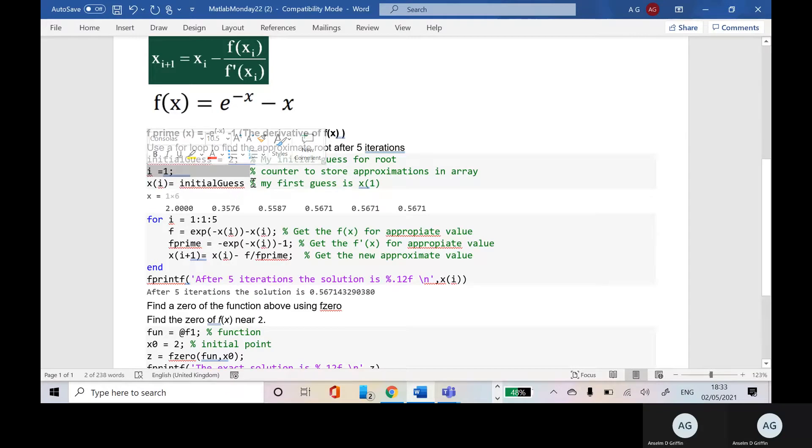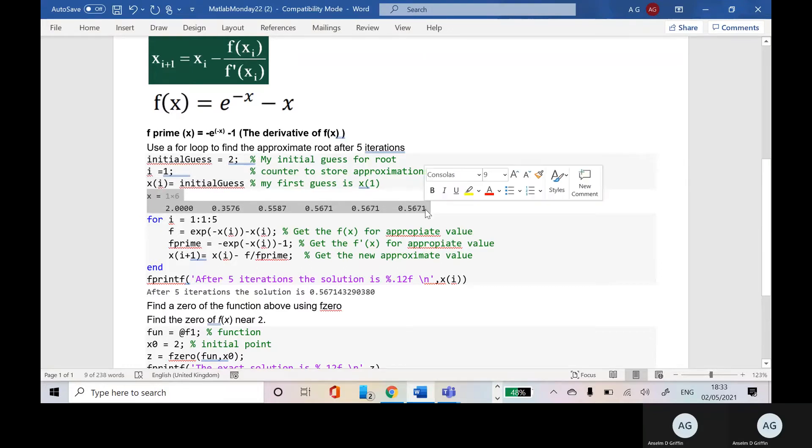So I need a counter for the loop or for the array. And x1 is my initial guess, so x1 would be 2. Now MATLAB being MATLAB, when I published it, it published the six values for the array x before the for loop. But that's just a quirk of publishing.